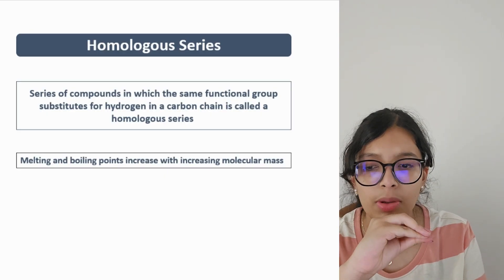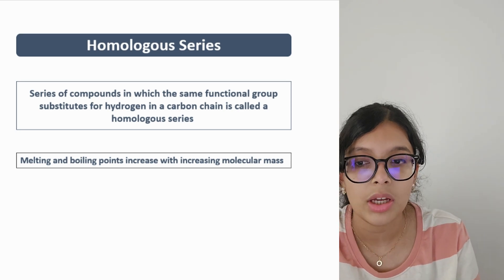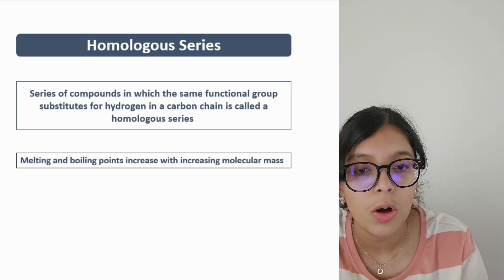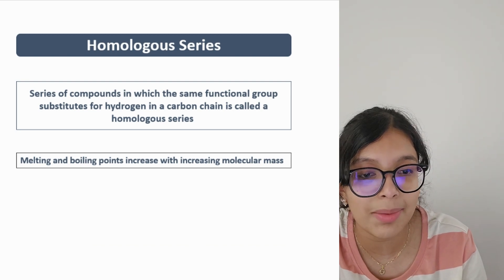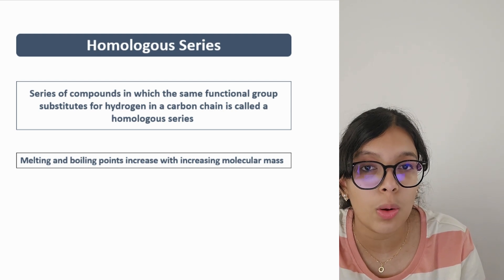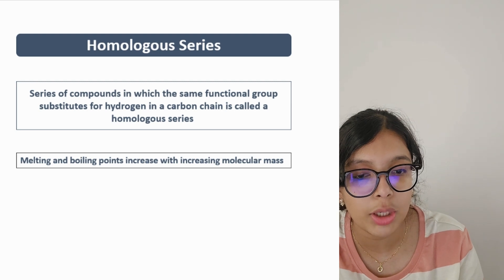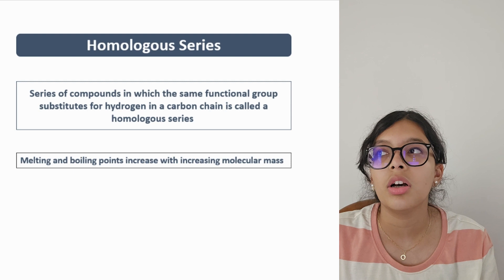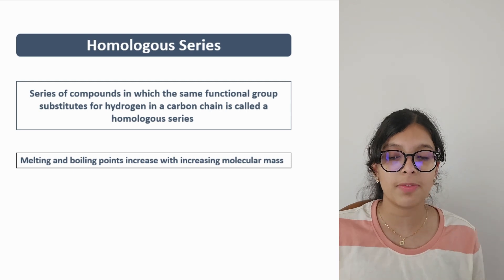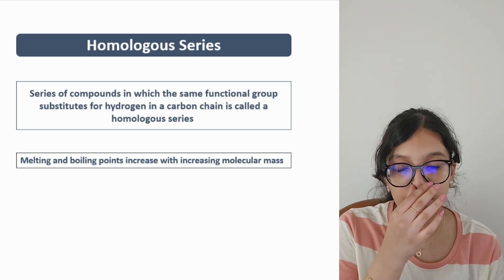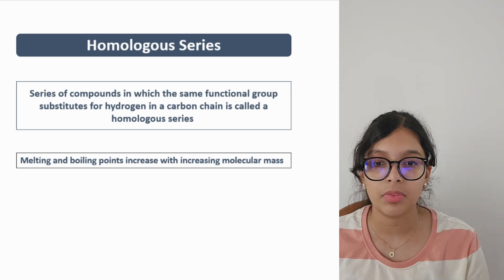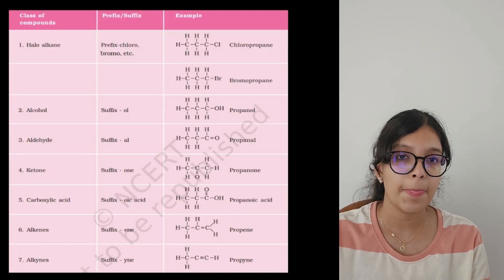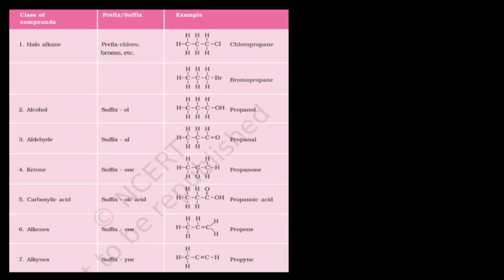A series of compounds with the same functional group substituted for hydrogen in a carbon chain is called a homologous series. Melting and boiling point increase with increase in molecular mass — this is an important reasoning answer for many exam questions. The same functional group is used throughout the series.